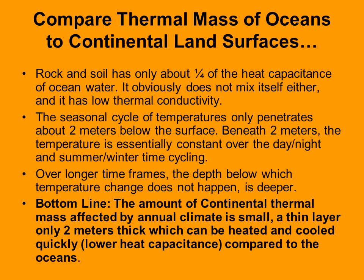Rock and soil also have much lower heat capacitance — only about a quarter of that of ocean water, partly because they're solid and don't mix well. Only about two meters is all it takes for the entire daily and annual temperature variance to be damped out — if you go deeper than about seven feet into the ground, the temperature is basically constant. Over much longer time frames of many decades and centuries, that will penetrate deeper.